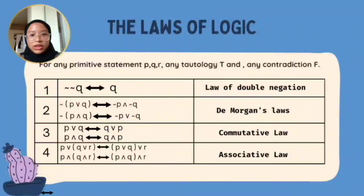For any primitive statement P, Q, R, any tautology T, and any contradiction F, the first law is the Law of Double Negation. For example, if we have not not Q, which is double negation of Q, we can return it as Q only.